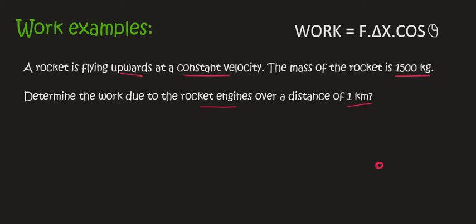So if we had to do a quick free body diagram, on that rocket, you've got the engines that are trying to propel it upwards. Then you've got gravity that's trying to keep the rocket down. Now, because we're moving at a constant velocity, it means that those two forces are balanced.